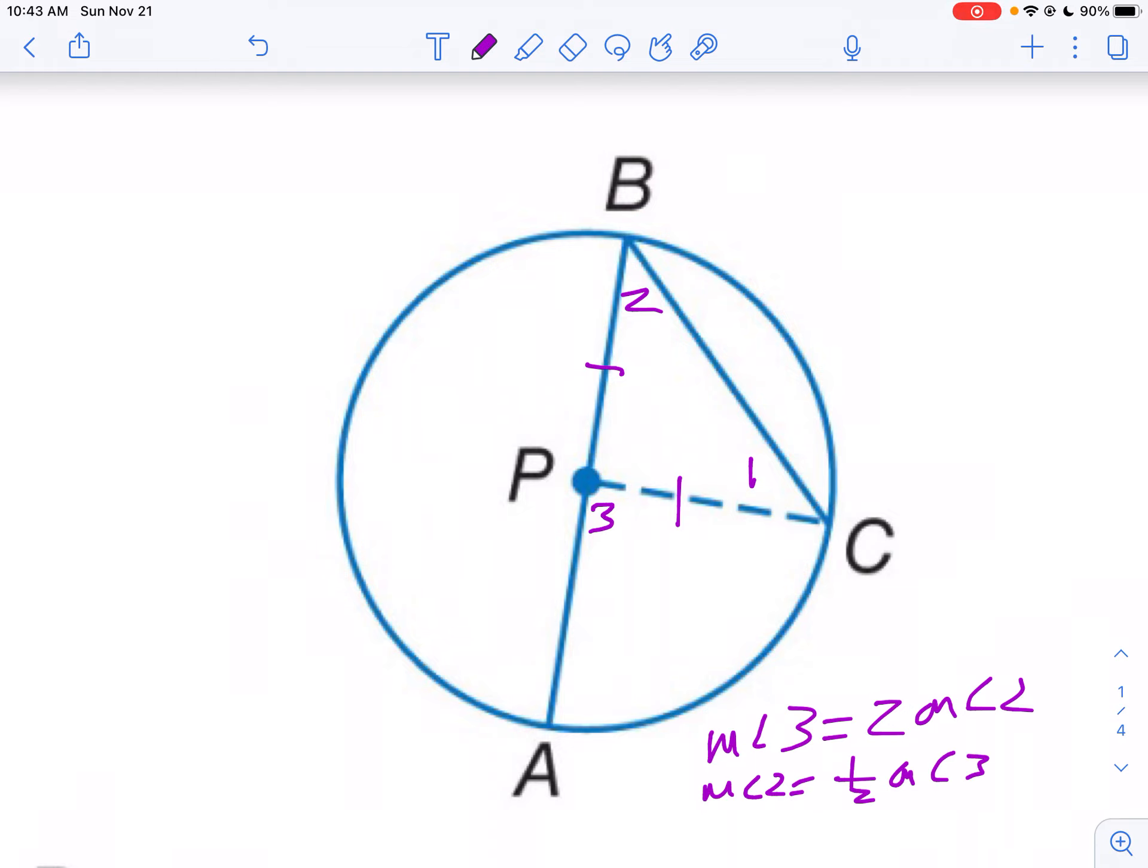If your picture doesn't look like this we can still do it. You're just going to draw in the diameter if your side of your angle doesn't go through the diameter. And then we do the proof the same way.